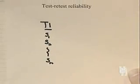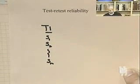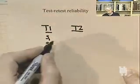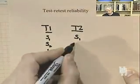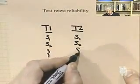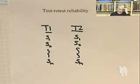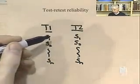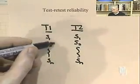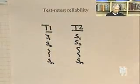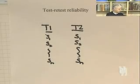You then administer that same test, or a similar test, at a second point in time, so that you have a second score from subject one, subject two, and so on down to subject N. You then assess the general relationship between the pattern of scores at time one and the pattern of scores at time two. That, in brief, is the process of test-retest reliability.